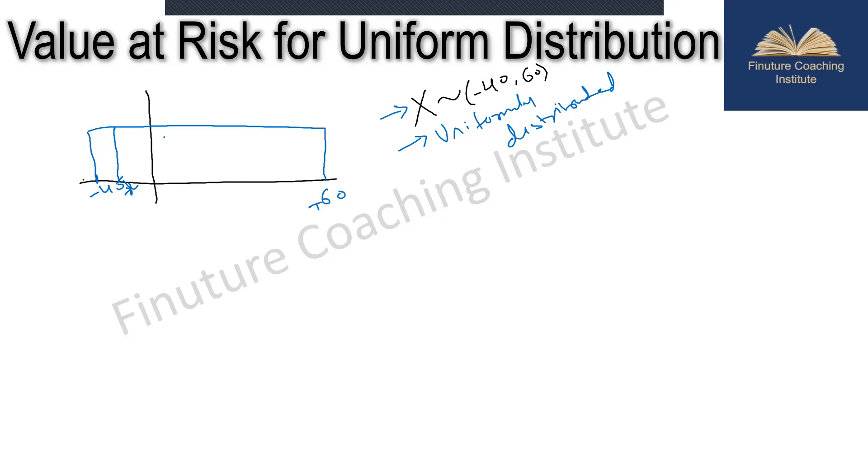Given it's a uniform distribution, the probability of getting minus 40 or 60 or any other value between these two numbers would be the same. That can be calculated as the reciprocal of the distance. So probability of x would be 1 upon b minus a. In this case, b is 60 and a is minus 40, so 60 minus minus 40, which comes to 1 upon 100.